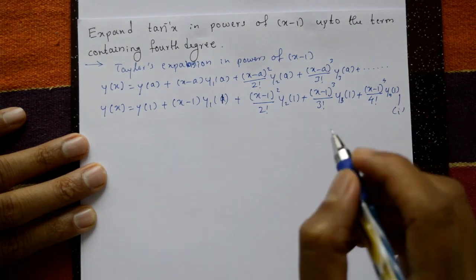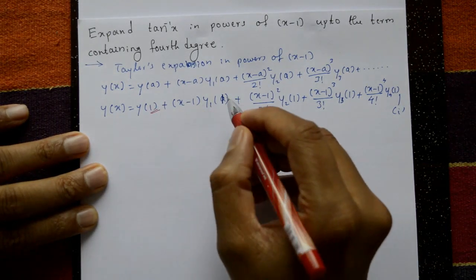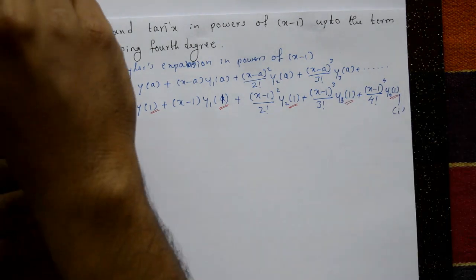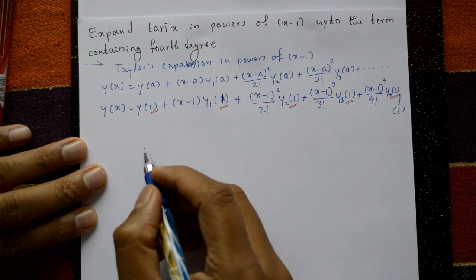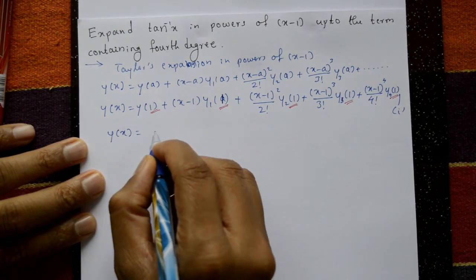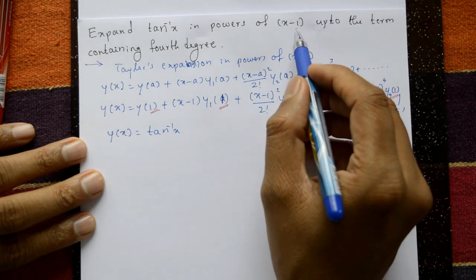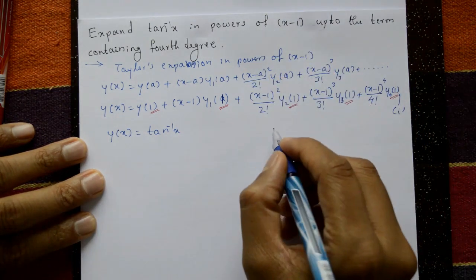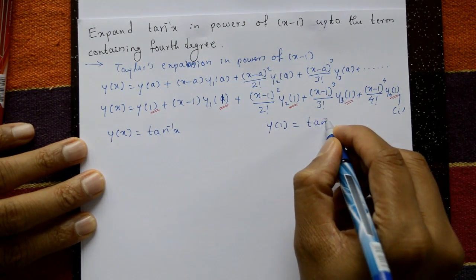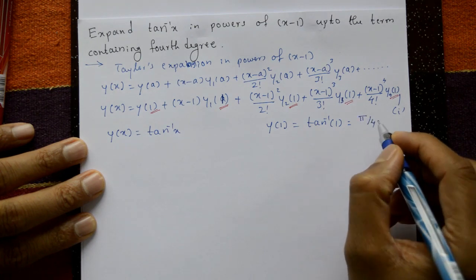We need the values of y(1), y₁(1), y₂(1), y₃(1), and y₄(1). Given y(x) = tan⁻¹(x) with a = 1. Put x = 1: y(1) = tan⁻¹(1) = π/4.